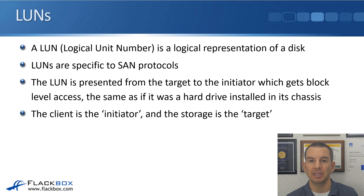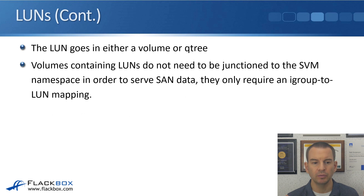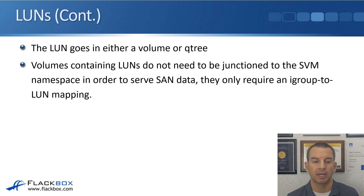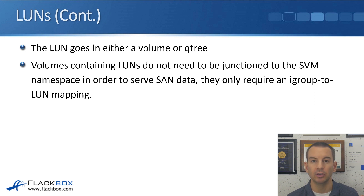The client is the initiator and the storage is the target. The LUN in ONTAP goes in either a volume or into a qtree. Volumes containing LUNs do not need to be junctioned to the SVM namespace in order to serve SAN data. They only require an iGroup-to-LUN mapping, which is how we do the LUN masking in ONTAP.